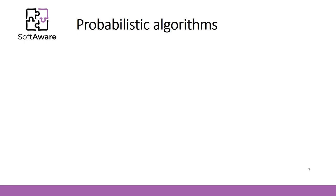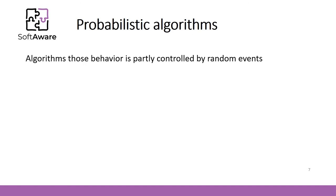Probabilistic algorithms are algorithms whose behavior is partly controlled by random events. We have already discussed quicksort — if you randomly choose a pivot value, this algorithm could be assigned to probabilistic. They are also called randomized algorithms. Using probabilistic algorithms, improved performance can be gained. However, there are some losses in the reliability of results: either no result at all may be produced, or an incorrect result may be returned. Also, different runs may produce different results, but reliability can usually be improved by multiple runs.